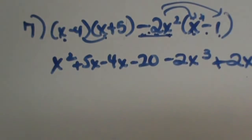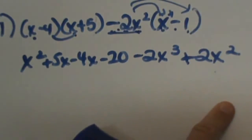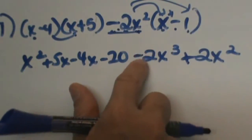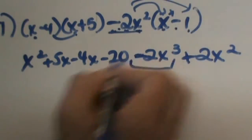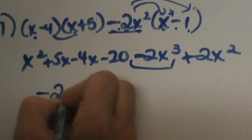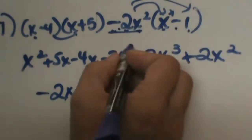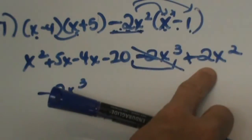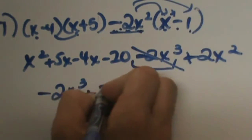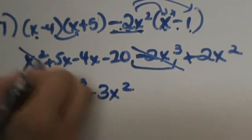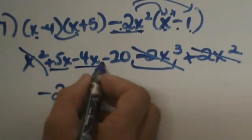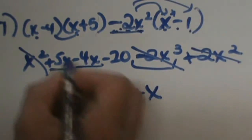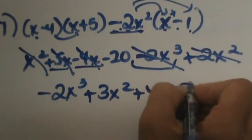Now I am going to add my like terms and get everything in descending order. My highest exponent is the cube, so I bring it down — but bring the negative with it. So you have negative 2x cubed as your first term. I like to cross it out to make sure I know it is accounted for. Now I have an x squared here and a 2x squared there, so adding gives 3x squared. Then I have 5x minus 4x, which is positive x. Then I just have a minus 20.